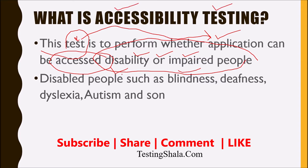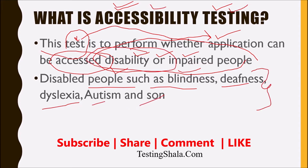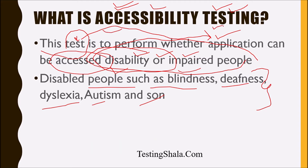The disabled people could be such as blind people, deaf people, dyslexia, autism, and so on. I hope now you are able to understand what accessibility testing is. Now let us understand what are the 10 best important testing tools available for accessibility testing.